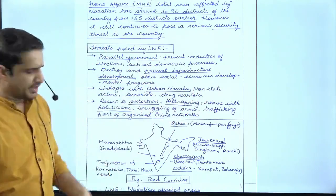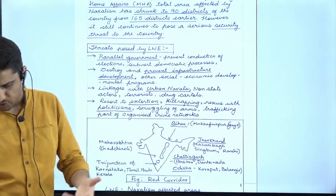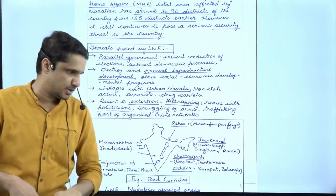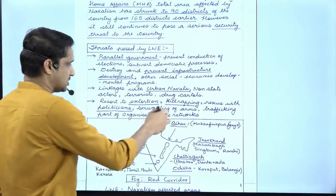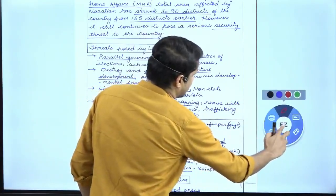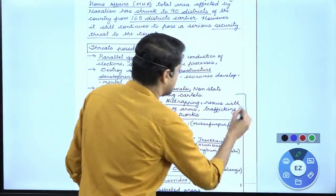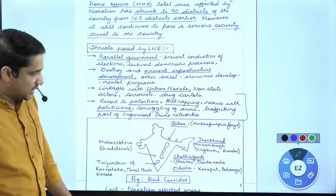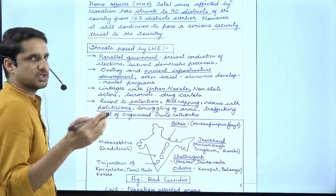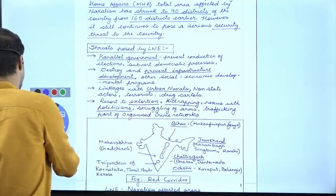She mentioned linking of LWE with organized crime, and then drew a very effective map. Drawing India's map is not a big issue - you can draw India's map in 30 seconds.